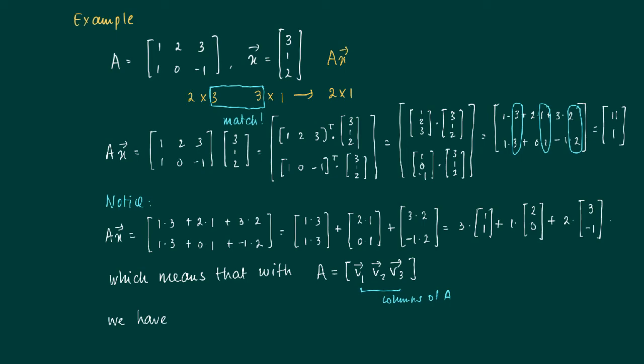We have that A times x equals x1 times the first column v1, 1, 1 plus x2 times v2, 2, 0 plus x3 times v3, which is 3 minus 1.